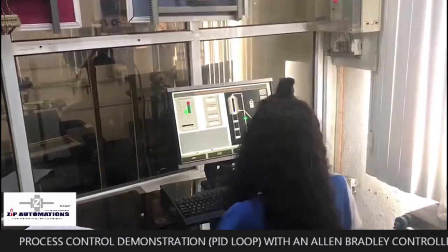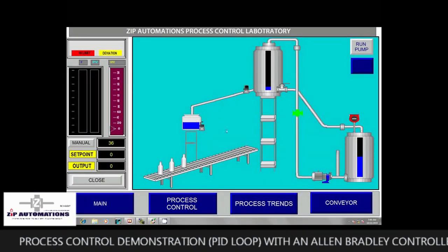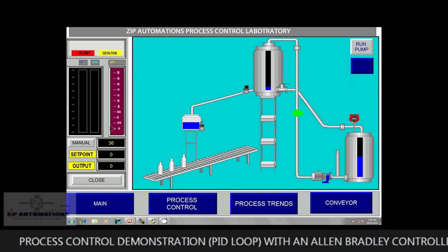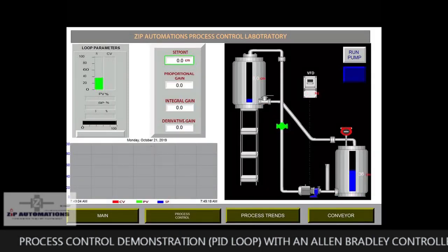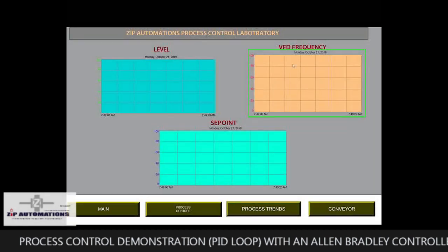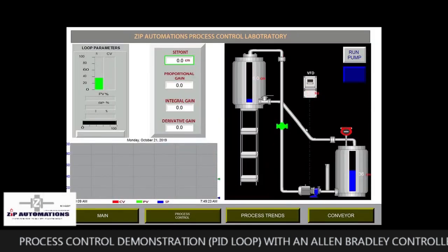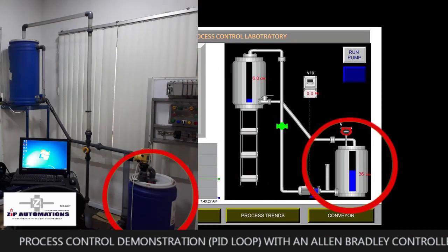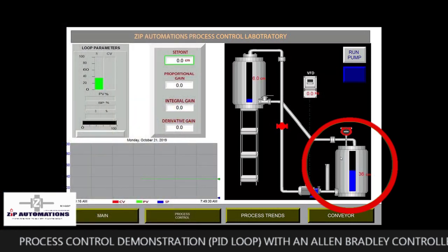This is the control screen designed with FactoryTalk software. Here we have the main screen, the process control screen, and the process trends. This tank here is our main focus and what we are trying to achieve is to control the water level in this tank.